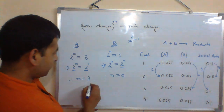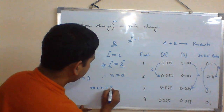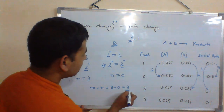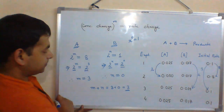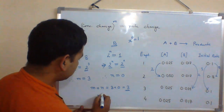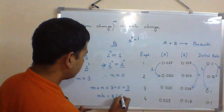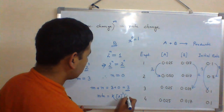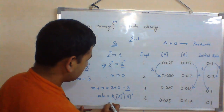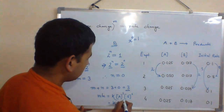Now the overall order of the reaction becomes M plus N, that is 3 plus 0, which equals 3. Basically it is a third order reaction. And the corresponding rate expression will be rate = K[A]^3 × [B]^0. Since B power 0 is 1, the rate becomes K[A]^3.